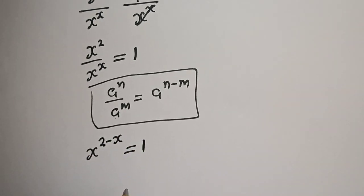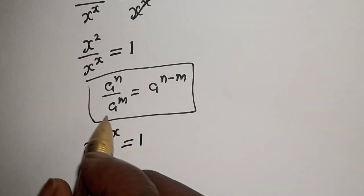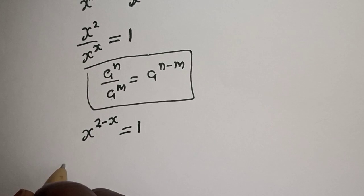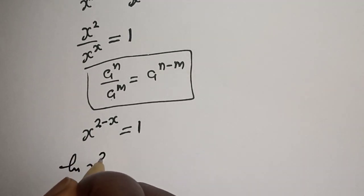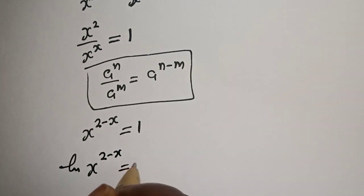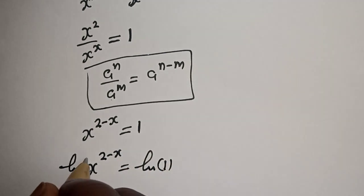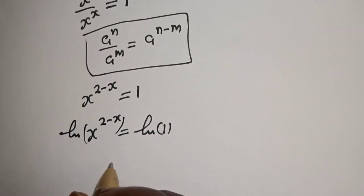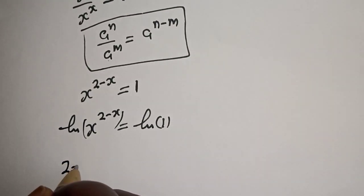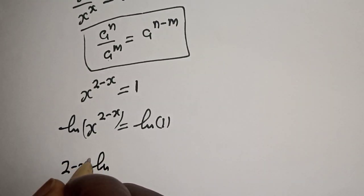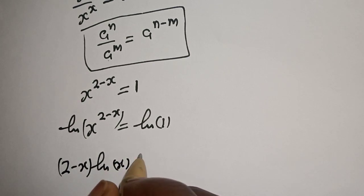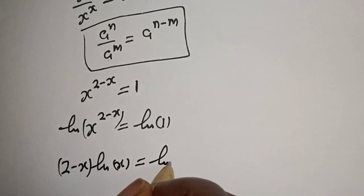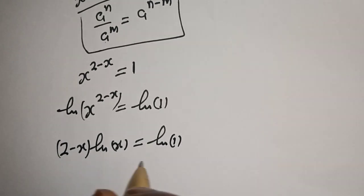Now let's take the natural log of both sides. The natural log of s raised to power 2 minus s is equal to the natural log of one. This gives us (2 minus s) times the natural log of s is equal to the natural log of one.